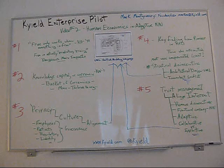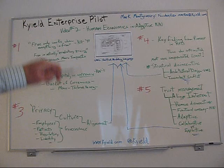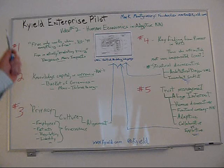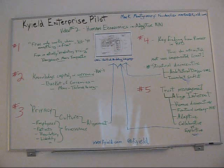A brief on K-Yield Enterprise pilot number two: Human Economics and Adaptive Neural Networks. We're talking about knowledge capital, the need for it, why the architecture is important — based on our system shown in the first video — the patented system that enables management of knowledge yield in the enterprise. You've got to have effective knowledge capital, a knowledge currency that's functional. There we have our brief on the humans in the neural network. Thank you.